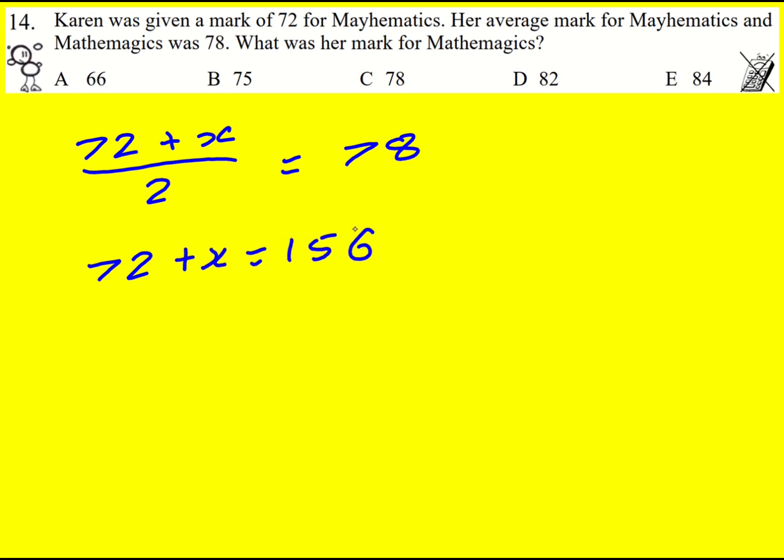So we're going to get 156, then x is going to be 156 minus 72, which gives us 84.